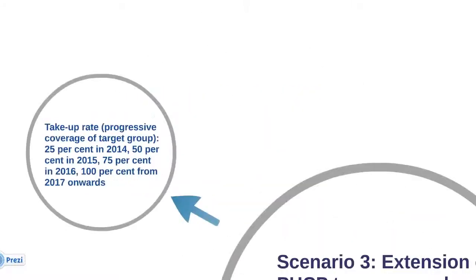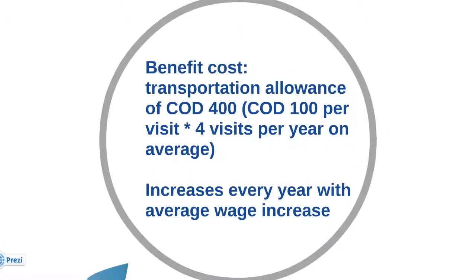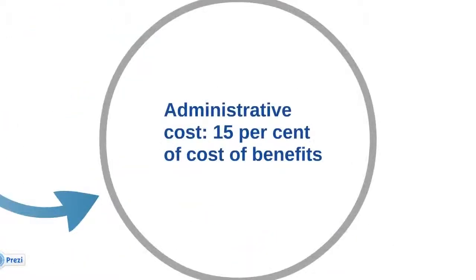While defining the transportation allowance, we can assume that on average each beneficiary makes 4 visits to a hospital or health care center, and the cost of traveling both ways is 100 dines. Thus, the total allowance in a year is 4 multiplied by 100. This is assumed to increase every year with average wage increase, since the largest component of health care costs is made up of wages for doctors, medical staff, and manpower costs, so the cost is indexed on average wage increase in the country. The administrative cost is assumed as 15% of the cost of benefits, similar to that for targeted schemes in the country.